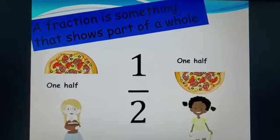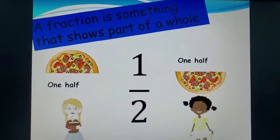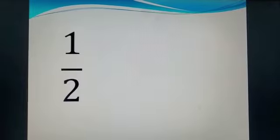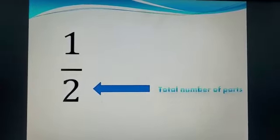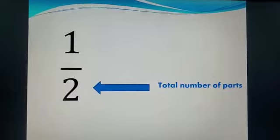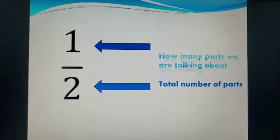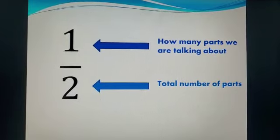This is represented as one over two. Let's talk a little bit more about this. What do the numbers mean? Our bottom number shows total number of parts and our top number shows us how many parts we are talking about.